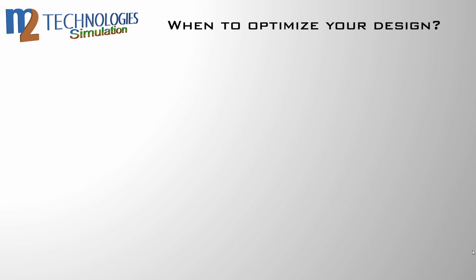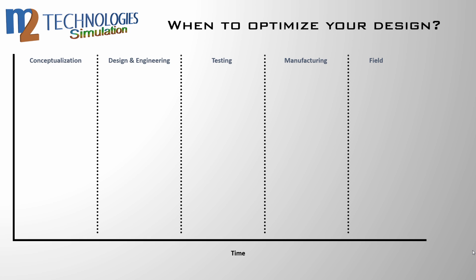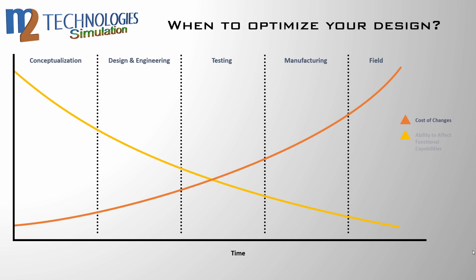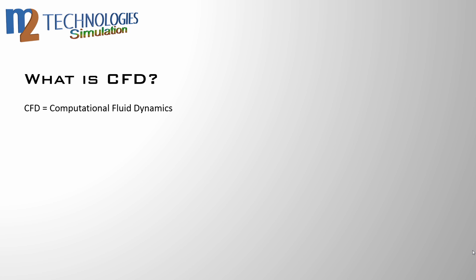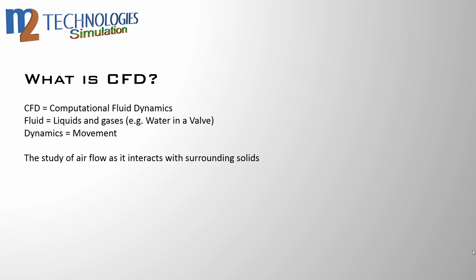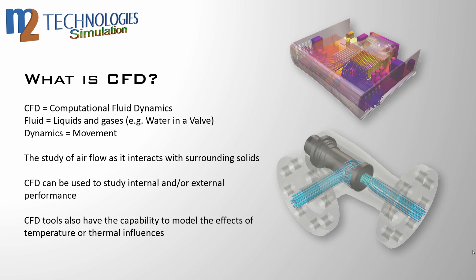So when is the best time to simulate and optimize your design? Over the product development lifecycle, the ability to affect the functional capabilities of the design declines as the cost of making changes increases. The best time to identify failure modes is during the design and engineering phase, when the design is still flexible enough to make necessary changes and the cost of those changes is minimized. CFD, or Computational Fluid Dynamics, studies the flow of liquids and gases in and around solid objects. Thermal effects can also be modeled.